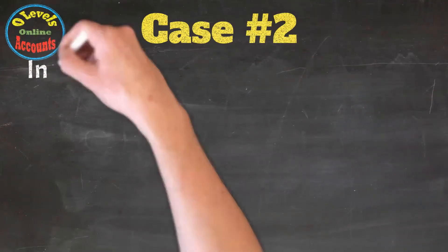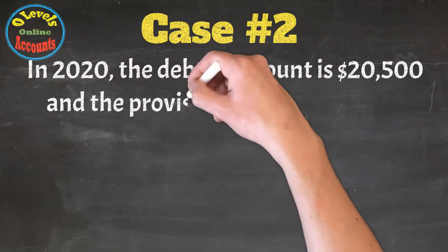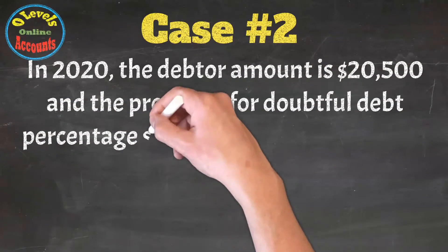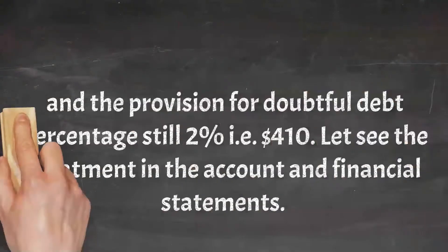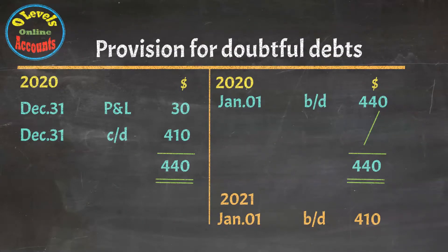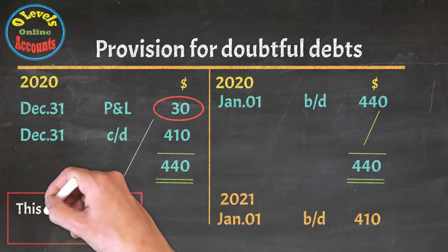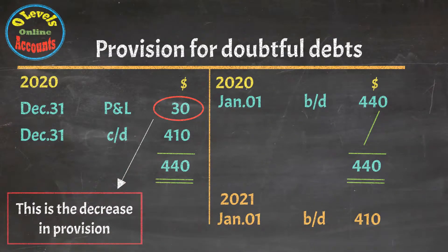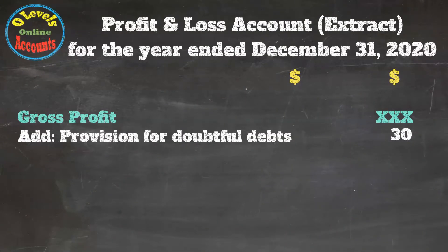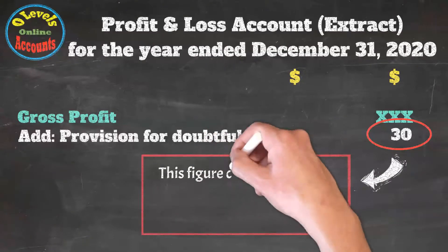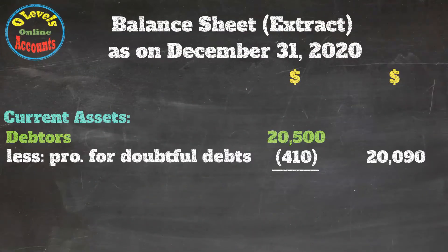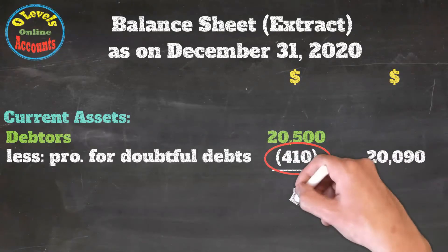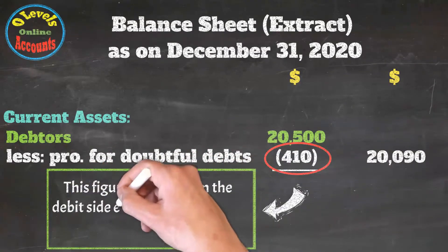Now we have case number two. The value of debtors decreased to $20,500 but the provision percentage is still 2%, so the new provision value would be $410. We have an opening balance of $440 and the new provision for 2020 is $410. We decrease the provision by $30 and record it on the debit side, giving a total provision of $410 at year end. In the profit and loss account extract, the $30 appears from the debit side of the provision account and will be added to gross profit. In the balance sheet extract, the provision for doubtful debts appears under debtors with $410 — the accumulated figure.